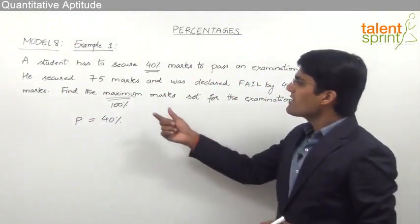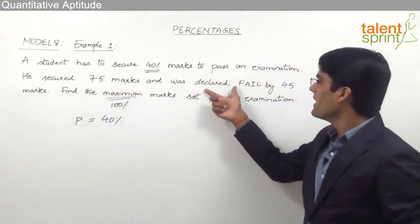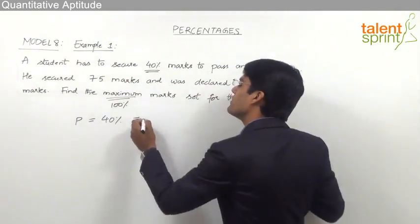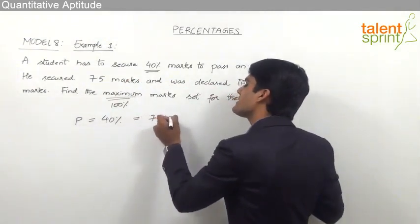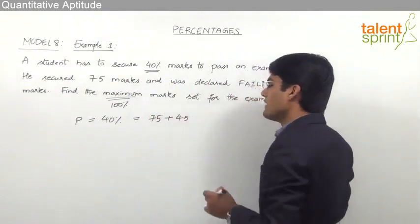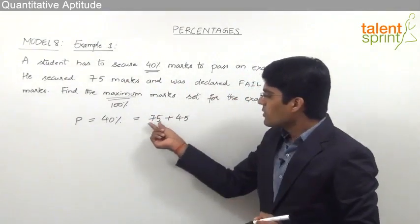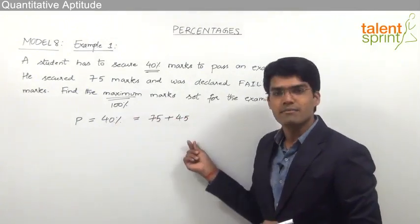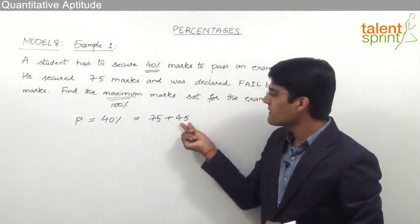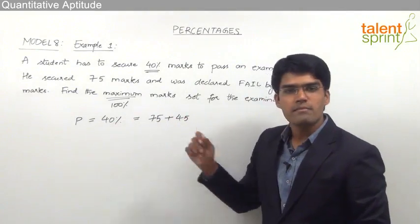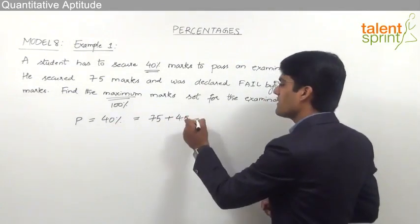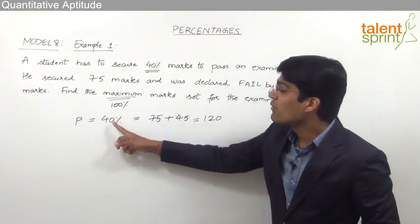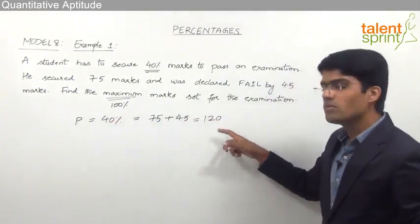He got 75 marks and failed by 45 marks, so 40% should be equal to 75 plus 45. Because he has already secured 75 — if he gets 45 more he will pass the exam. So 75 plus 45 is the passing mark, which equals 120. So 40% is equivalent to 120.